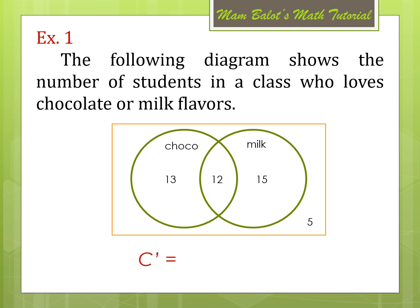How about the C complement? When we say complement, it signifies the word NOT. So, these are the students who don't love choco flavor. If the circle in red represents choco lovers, therefore, outside of that circle doesn't love the choco flavor, which are 15 and 5. So, the C complement is equal to 15 plus 5, which is equivalent to 20.